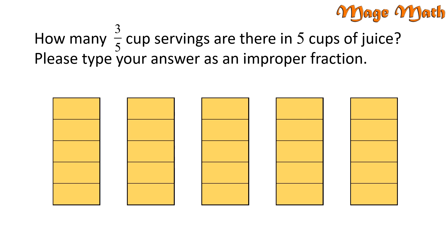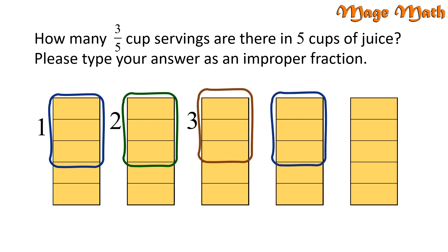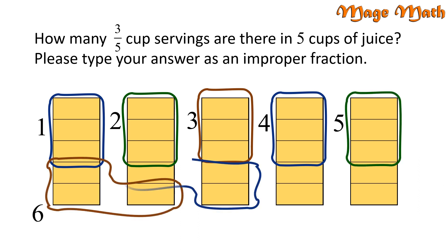We have 1, 2, 3, 4, 5, 6, 7, 8 groups of 3 fifths. And 1 small rectangle left over.